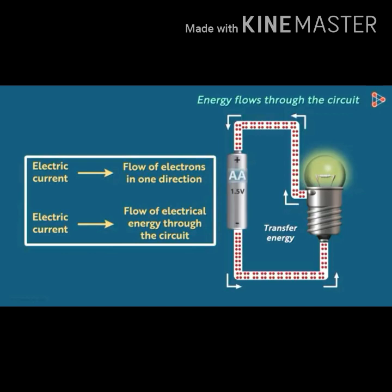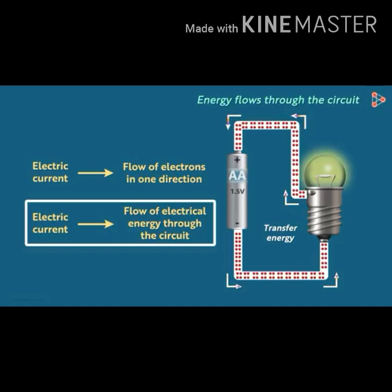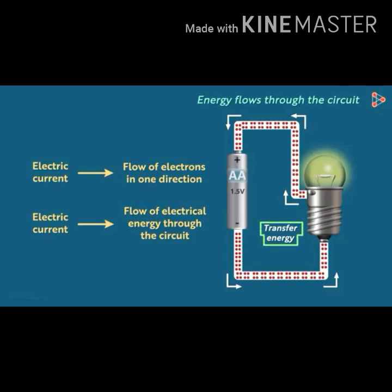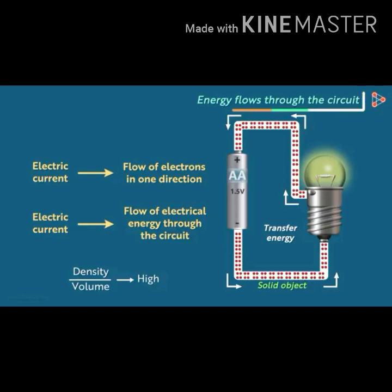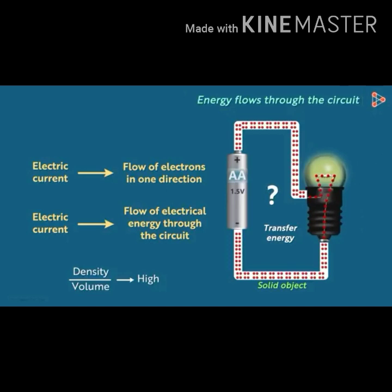The most correct definition is that electric current is the flow of electrical energy through the circuit. The electrons only drift slightly from their resting positions and transfer energy to neighbors, because the wire is a solid object and the density of atoms per unit volume is high — there is no space for electrons to travel all the way through. The electrons in the copper wire transfer energy to electrons in the metal rod connected to one terminal; this energy then flows through the rod, through the filament, and out from the second terminal. When energy flows between the two ends of the filament it heats up the filament, which in turn glows and gives off light.